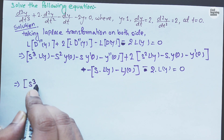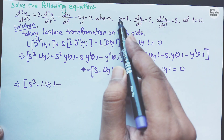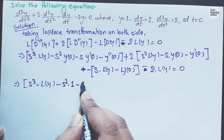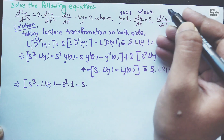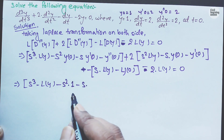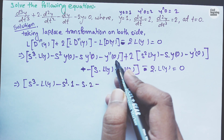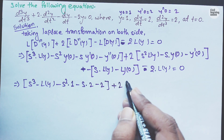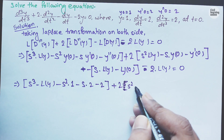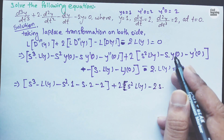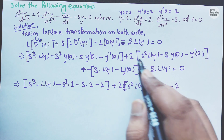Now substituting the initial values — y(0) = 1, y dash(0) = 2, y double dash(0) = 2 — we get: s cubed times L{y}, minus s squared times 1, minus s times 2, minus 2, plus 2 times [s squared times L{y}, minus 2s times 1, minus 4], minus s times L{y}, plus 1, minus 2 times L{y} equals zero.